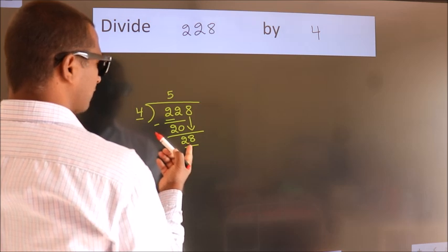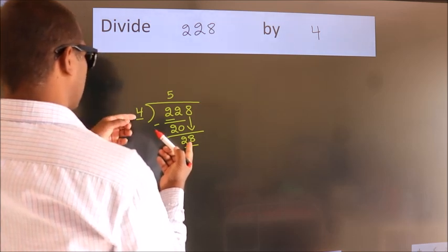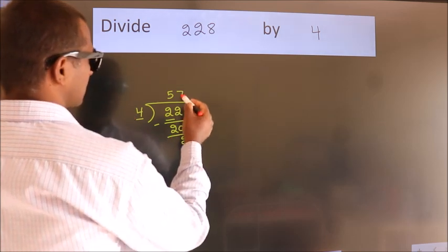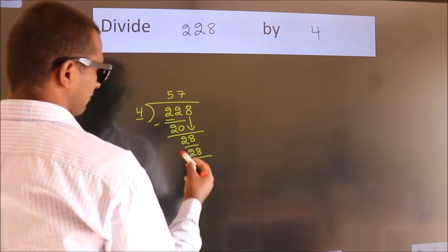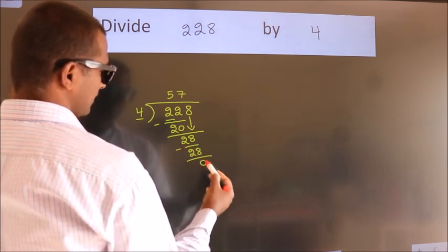When do we get 28 in the 4 table? 4 sevens 28. Now we subtract. We get 0.